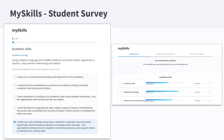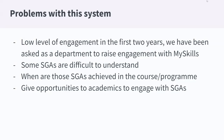The MySkills survey has been running for the last three years. But there are things to improve with this system — there was a very low level of engagement in the first two years, around 50% of students engaging. Because of that, on the last year we were asked as a department: what can you do to raise engagement with MySkills?